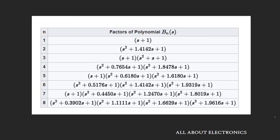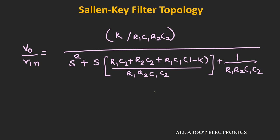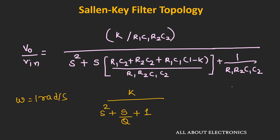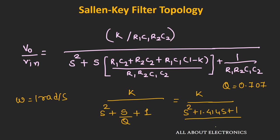To design higher order filters, we use Butterworth filter polynomials. For a low pass filter with cutoff frequency ω = 1 rad/s, the term 1/(R1C1·R2C2) becomes 1. With Q = 0.707 for Butterworth design, the second order Butterworth polynomial becomes: K / (s² + 1.414s + 1). This is the polynomial for the second order Butterworth filter design at 1 radian per second.